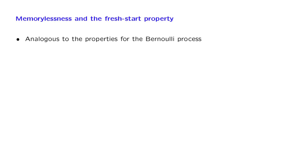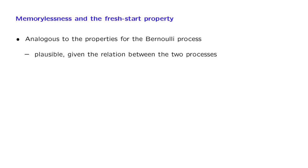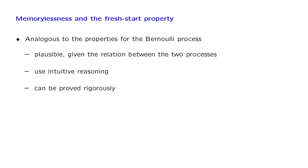In a nutshell, we will argue that the Poisson process has memorylessness properties that are entirely similar to those that we have seen for the Bernoulli process. This should not be surprising, since the Poisson process can be thought of as a limiting case of the Bernoulli process. We will reason through these properties not in the style of a formal mathematical proof, but with an intuitive argument. But I would like to assure you that the intuitive argument can be translated into a rigorous proof.